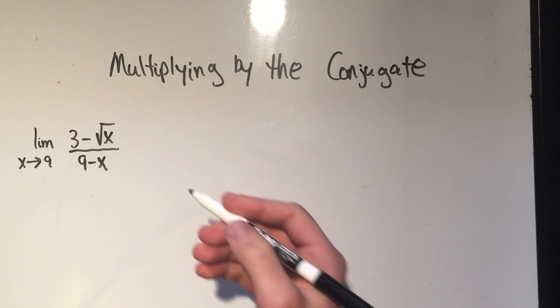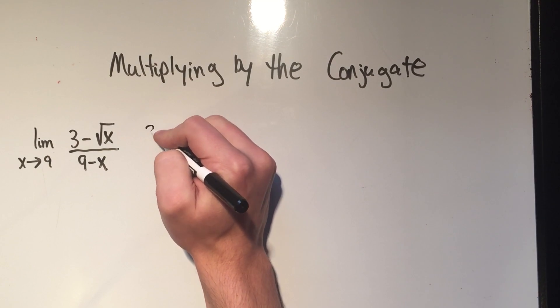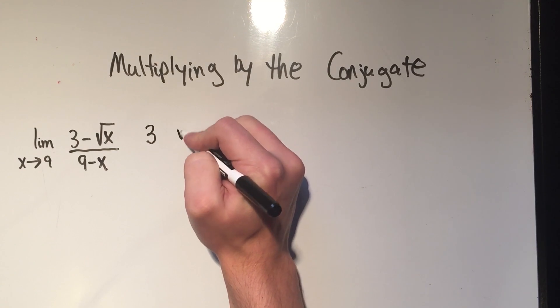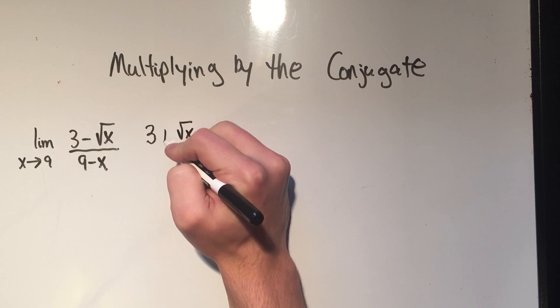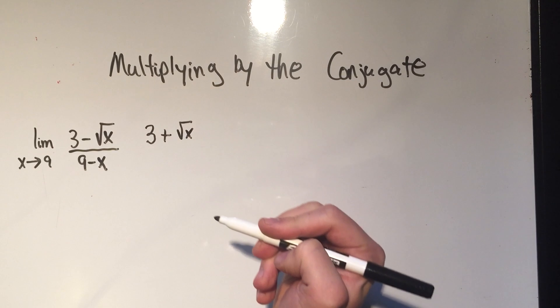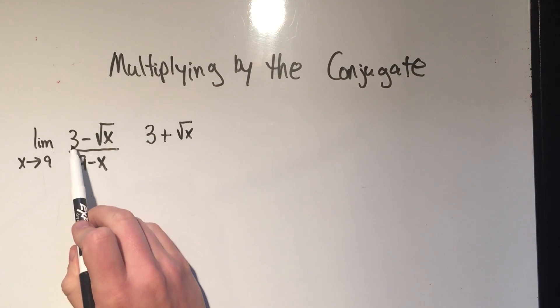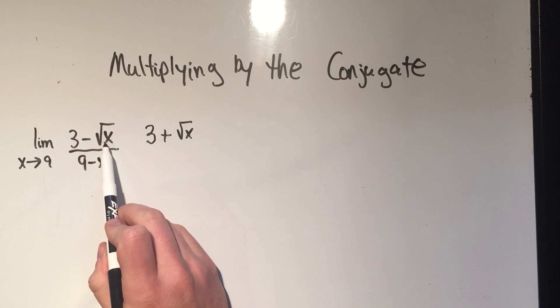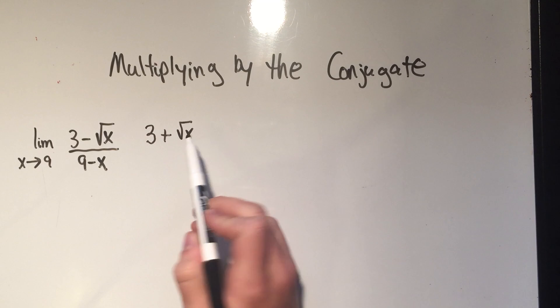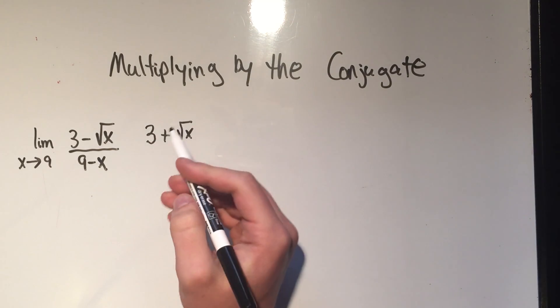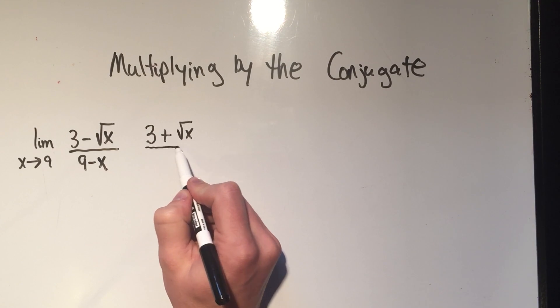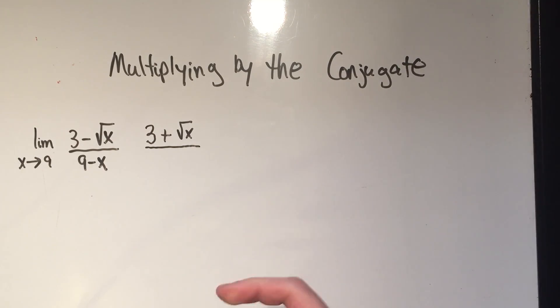So I'm going to multiply by the exact same thing but with the sign flipped. So 3 minus square root of x, the conjugate would be 3 plus the square root of x.